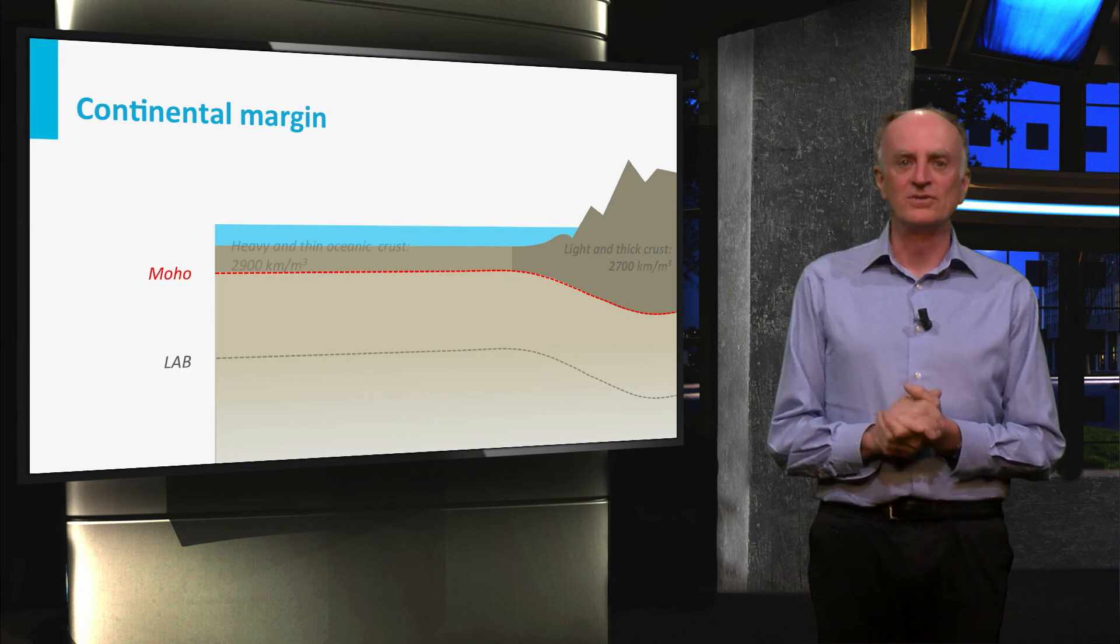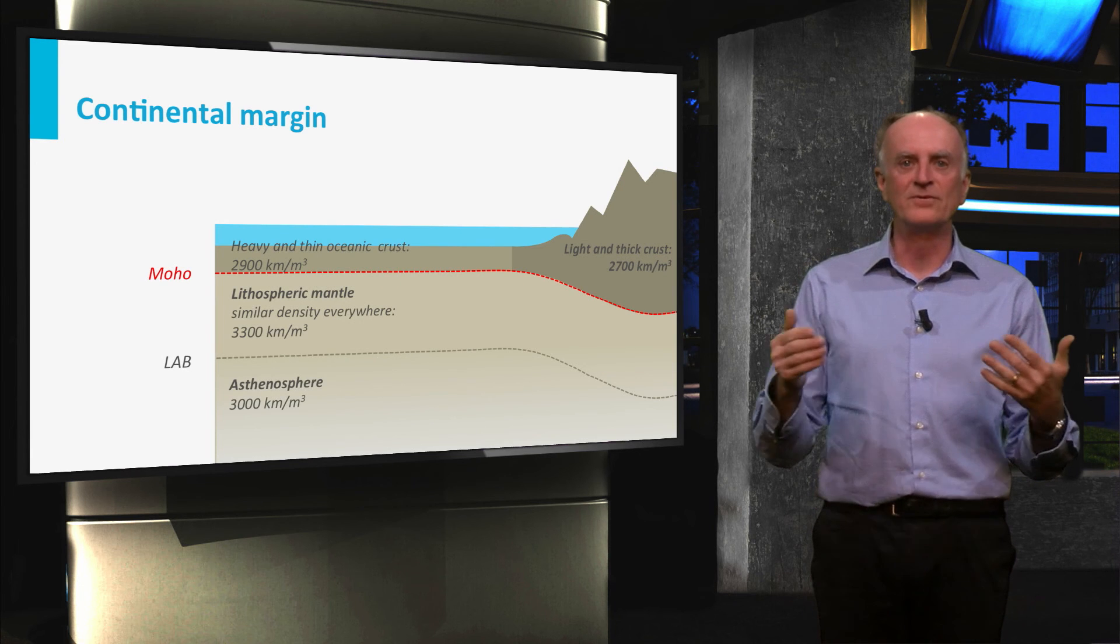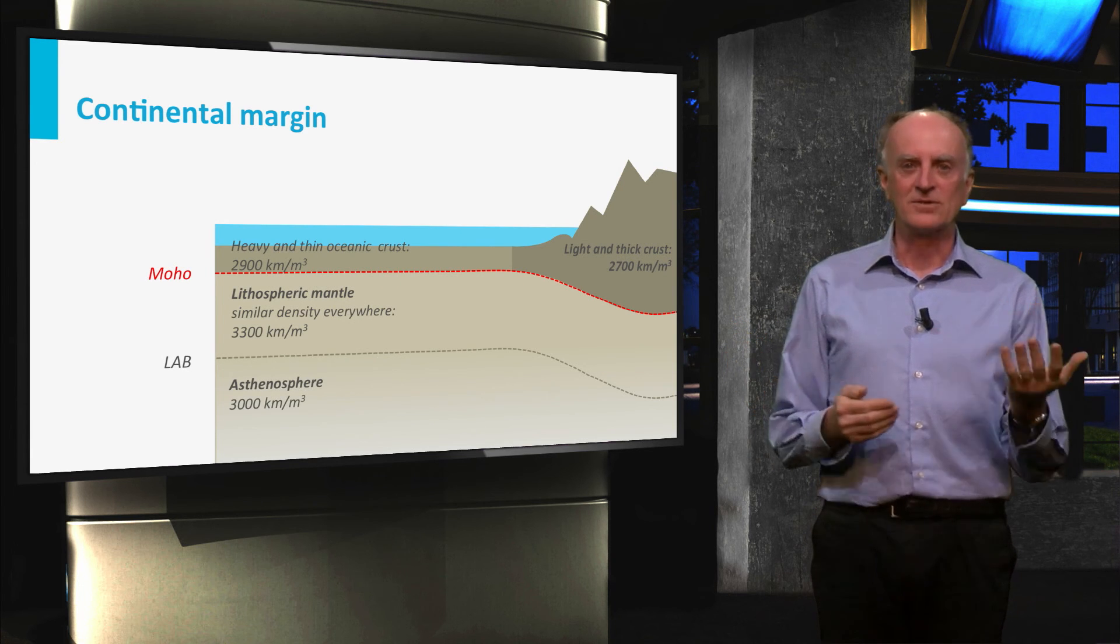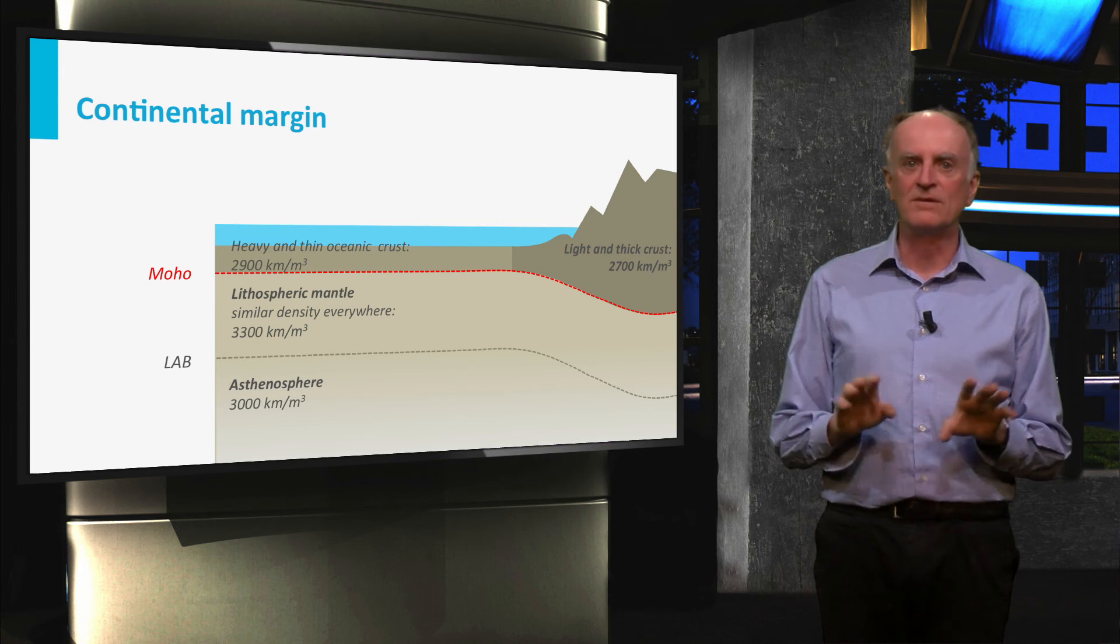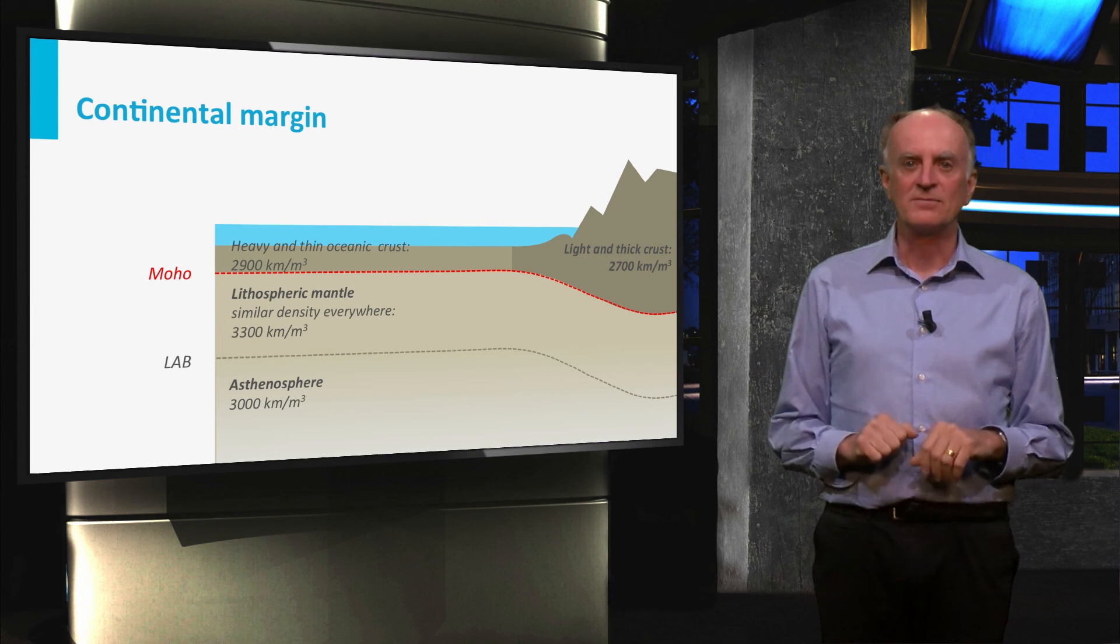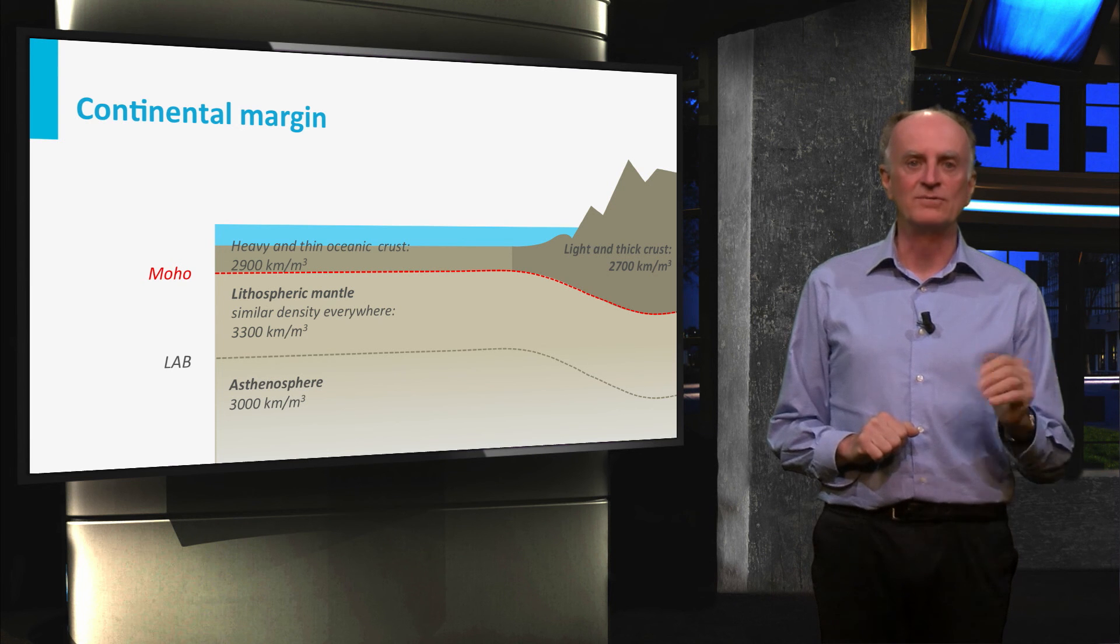Now let us go back to geology and consider a typical passive continental margin. Isostasy is able to explain most of the first-order topography you see. Representative density values are shown in the picture.